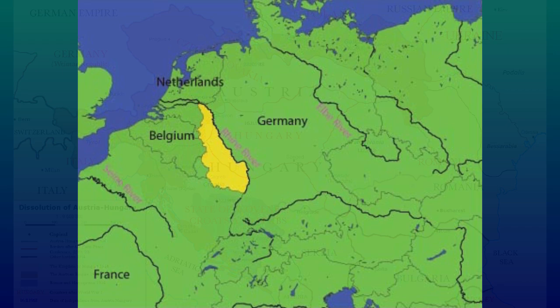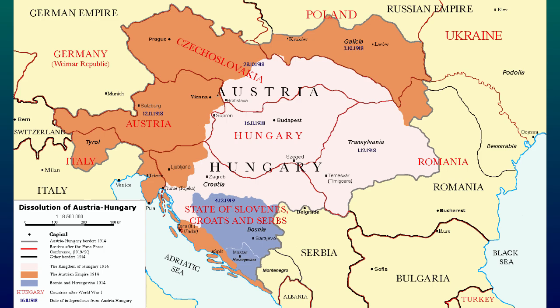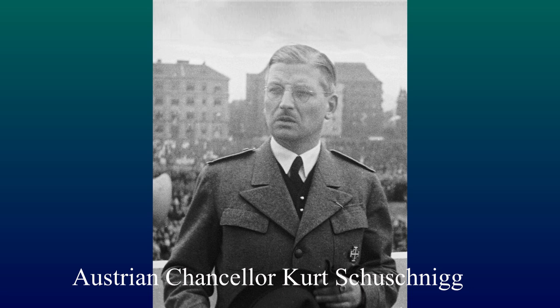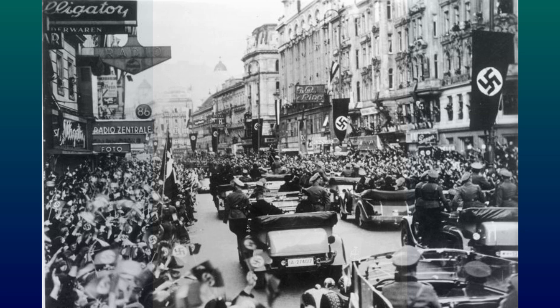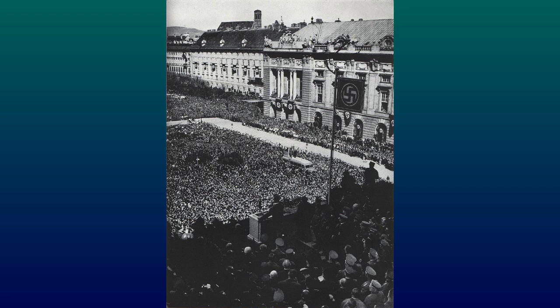In 1938, the Austrian Nazi Party fomented unrest in the Republic of Austria. The Austrian government jailed the leaders of the Nazi Party. Hitler threatened a German military invasion of Austria unless the Nazis were allowed a place in the government. The Austrian Chancellor eventually resigned, and the new Chancellor requested German troops to restore order. On March 12, 1938, German forces entered Austria, and the nation came under the control of Germany.